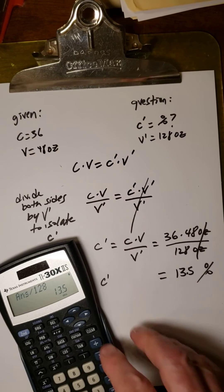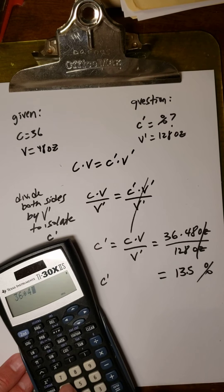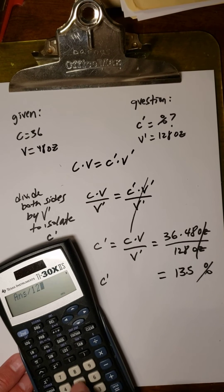Let's put this into our calculator. Clear. 36 times 48. Enter. Divided by 128.